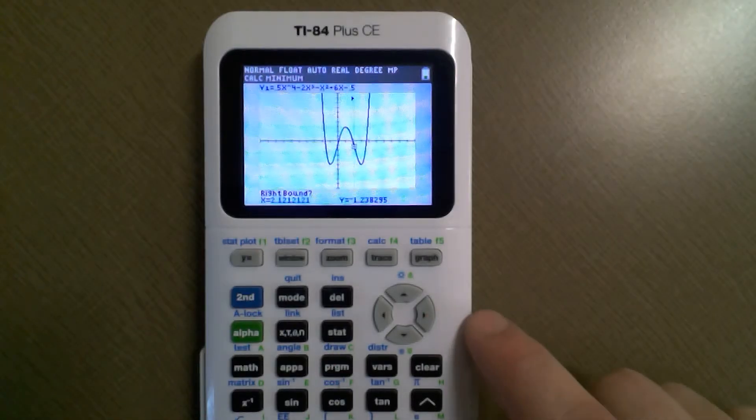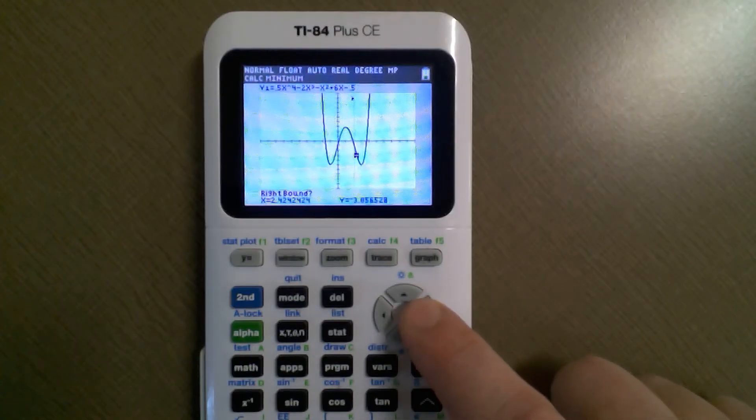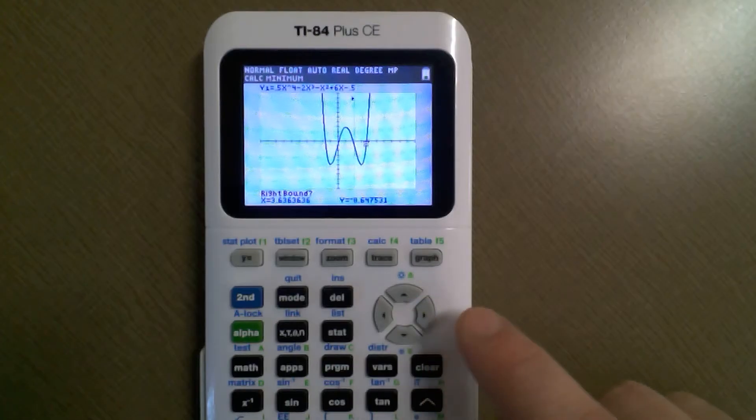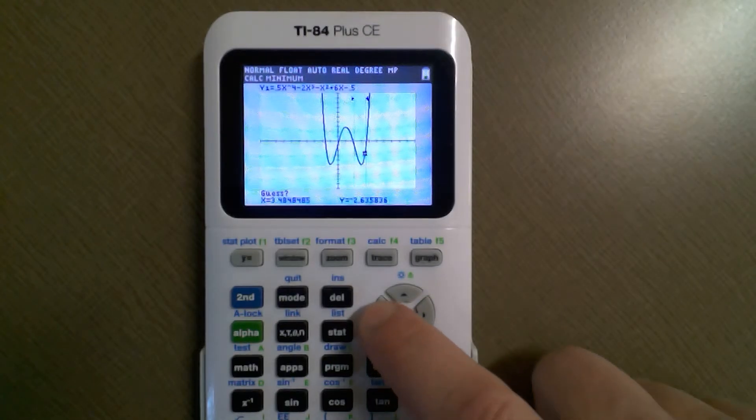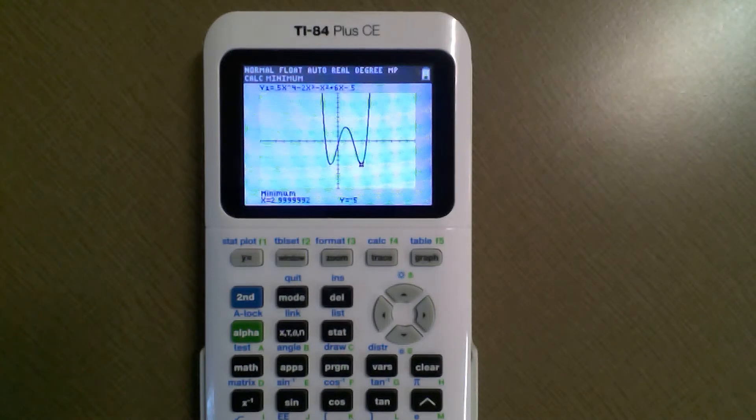Then right bound, I'm going to go over on the right of that minimum, hit enter. Then I go down to the other minimum and hit enter. This is 2.9999992, so 3, you can safely assume that's 3. And then the y is negative 5, so it'd be 3 comma negative 5.